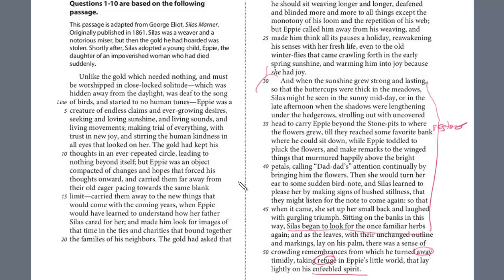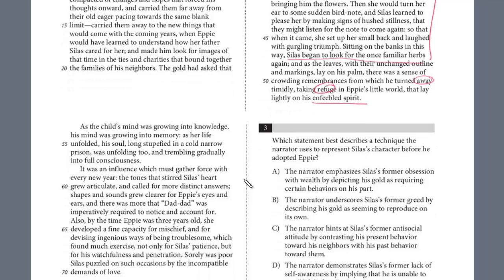Usually a question like this you're going to find toward the end because it's already described the interaction, and then it's just summarizing it. And so if we look toward the end: 'As the child's mind was growing into knowledge and his mind was growing into memory. As her life unfolded, his soul, long stupefied in a cold, narrow prison, was unfolding too and trembling gradually into full consciousness.' So this is really good detail here.